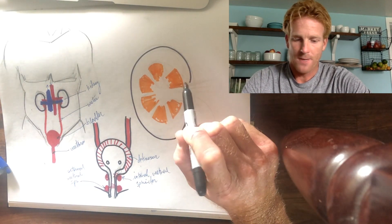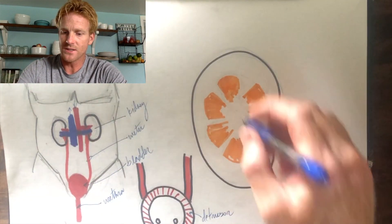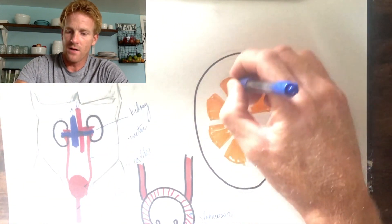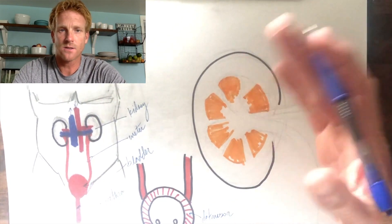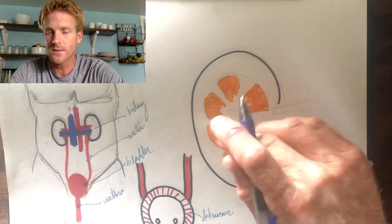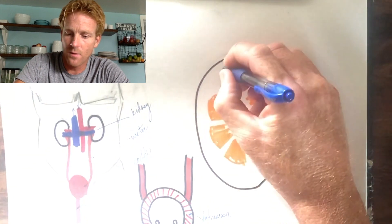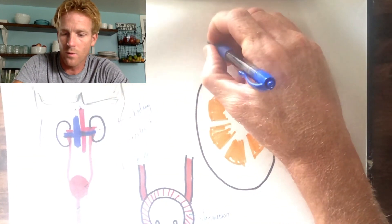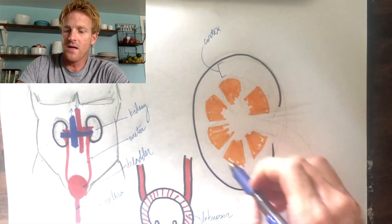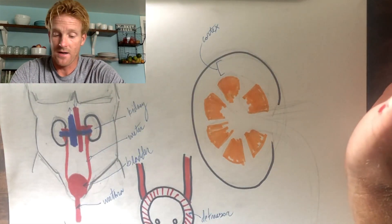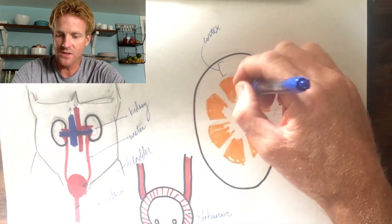The kidney can be divided into two general regions. The blank stripe of tissue around the periphery of the kidney is called the cortex — it's on the outside. Everything on the inside is called the renal medulla.